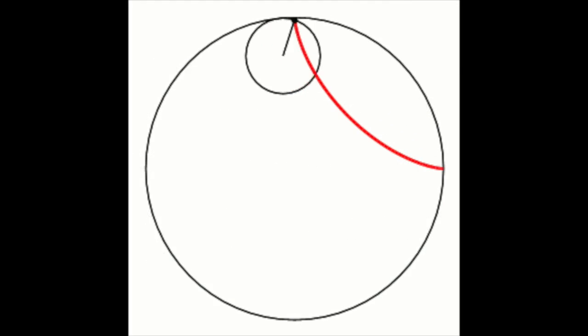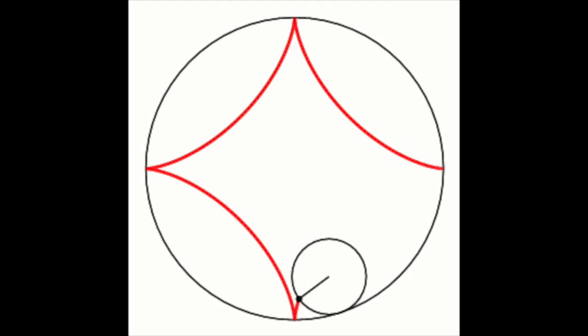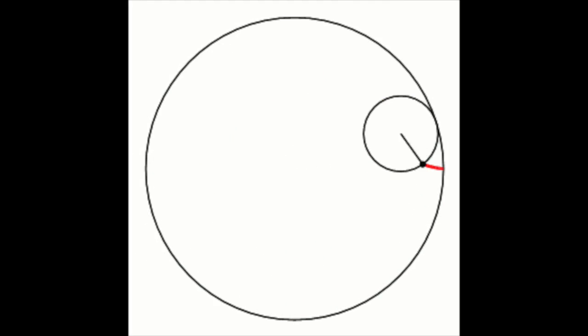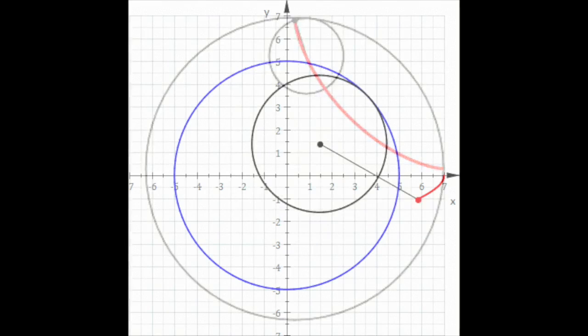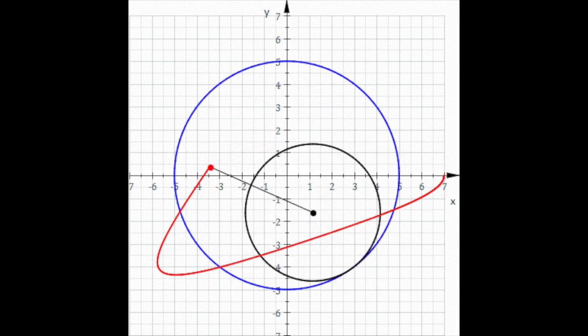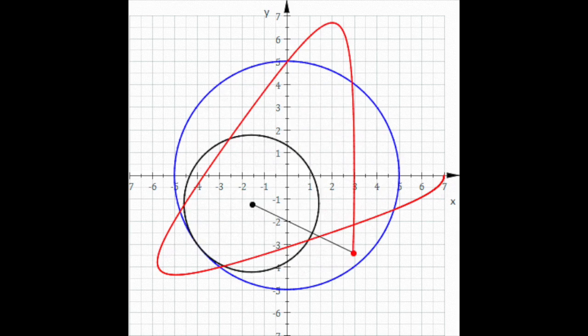The type of hypocycloid depends on where the point whose path is being traced is located on the rolling circle. If it lies on the circumference of the circle, the curve generated is an ordinary hypocycloid. If it lies anywhere else, the result is what's called a hypotrochoid.